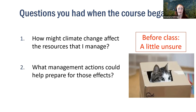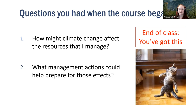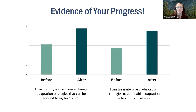Now at the end of the course, you've got this. We hope you feel better equipped to answer those questions, think about the specific effects of climate change to your project area, and start to identify adaptation actions. We also have evidence of your progress. We asked you questions before you started the workbook and then the same questions at step four. One question was whether you can identify viable climate change adaptation strategies for your local area — a little more than half felt you could before, and now most of you indicated that you can.